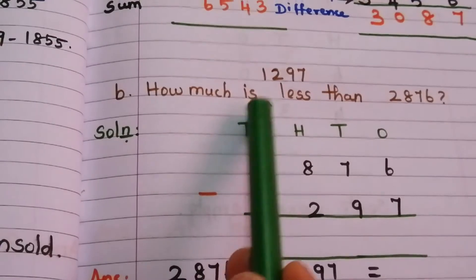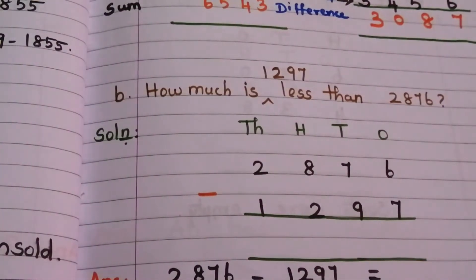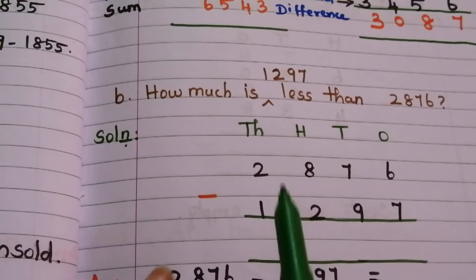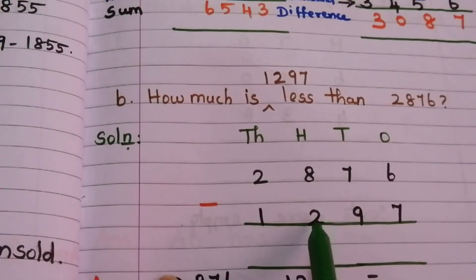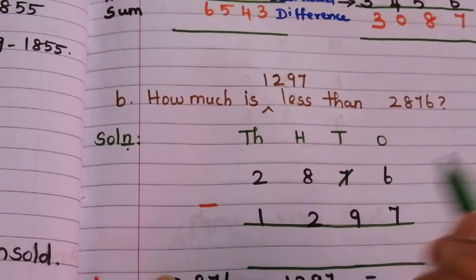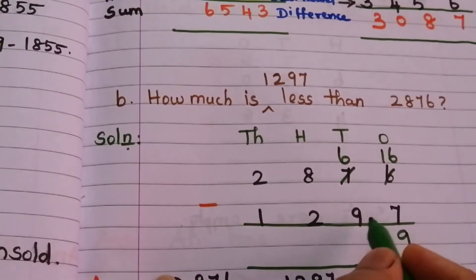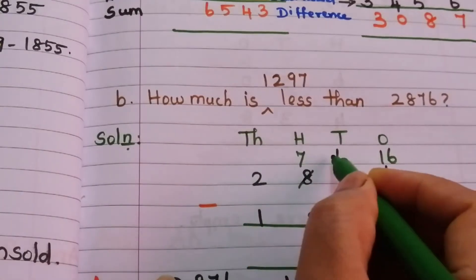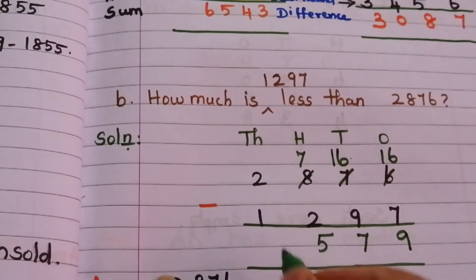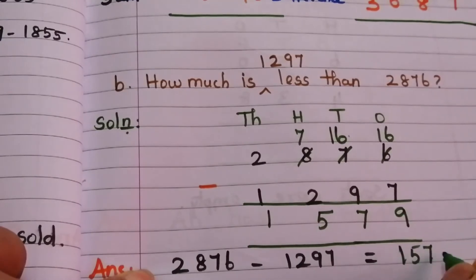B: How much is 1,297 less than 2,876? When they ask 'less than' or 'more than,' we subtract the smaller number from the bigger number. So 2,876 minus 1,297. We cannot subtract 7 from 6, so borrow — 16 minus 7 = 9. Cannot subtract 9 from 6, so borrow — 16 minus 9 = 7. 7 minus 2 = 5. 2 minus 1 = 1. The answer is 1,579.